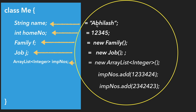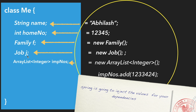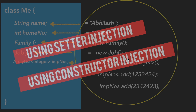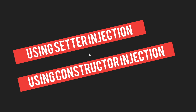Our class should have the name variable, homeNumber variable, f variable, j variable, and importantNumbers variable — those are what I depend on. Spring is going to inject the values for name, homeNumber, the new Family object, the new Job object, and the ArrayList entries. Spring will do it using setter injection or constructor injection — those are the two concepts we'll cover in this tutorial.